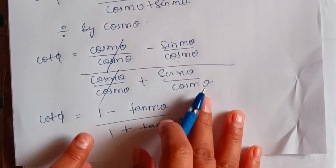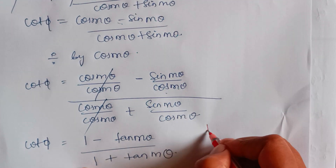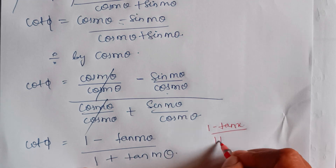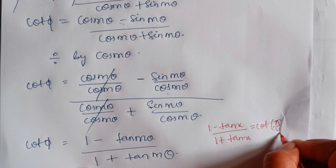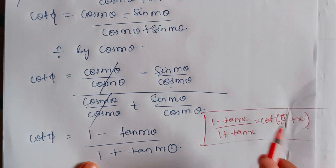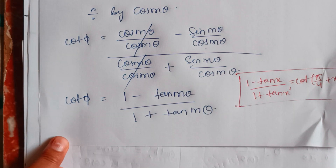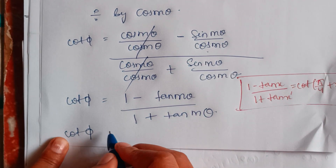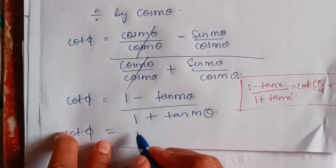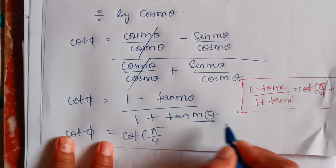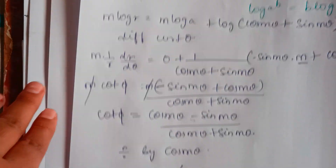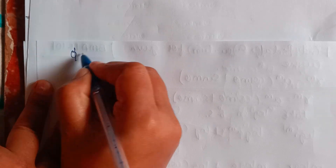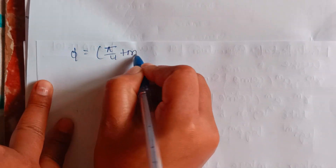So (1 − tan mθ)/(1 + tan mθ) can be recognized as cot(π/4 + mθ), using the standard identity. So cot φ equals cot(π/4 + mθ), which means φ equals π/4 + mθ.